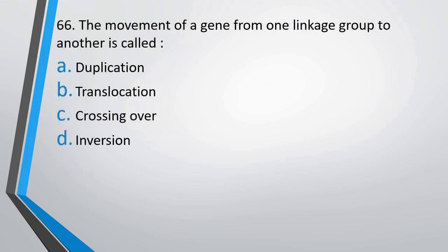Question number 66. The movement of a gene from one linkage group to another is called: (A) duplication, (B) translocation, (C) crossing over, or (D) inversion. The correct answer is option B — translocation.